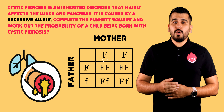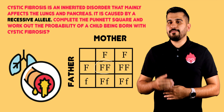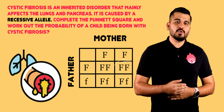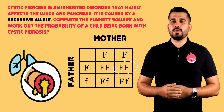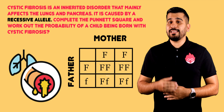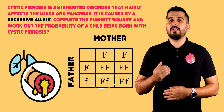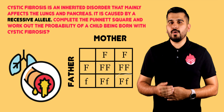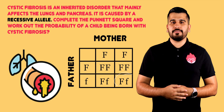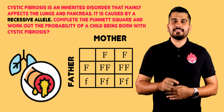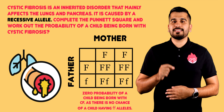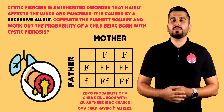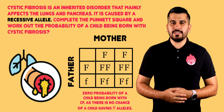In box one it would be FF, box two FF, box three Ff, and box four Ff. In this case, there is zero chance that any child this couple will have will be born with cystic fibrosis.